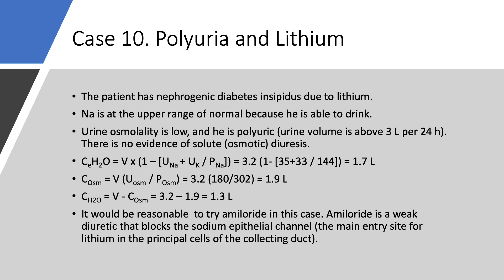There's really no evidence of solute diuresis. Urine sodium is 35, urine potassium is 33. If you calculate the electrolyte free water clearance, you get 1.7 liters — about half the urine volume is electrolyte-free water. No solute diuresis. If you calculate the osmolar clearance (C-osm), you get 1.9 liters. Free water clearance equals total urine volume 3.2 minus osmolar clearance 1.9, giving 1.3 liters of free water clearance. A link to lectures 4 and 5 on osmolar and free water clearance will be provided.